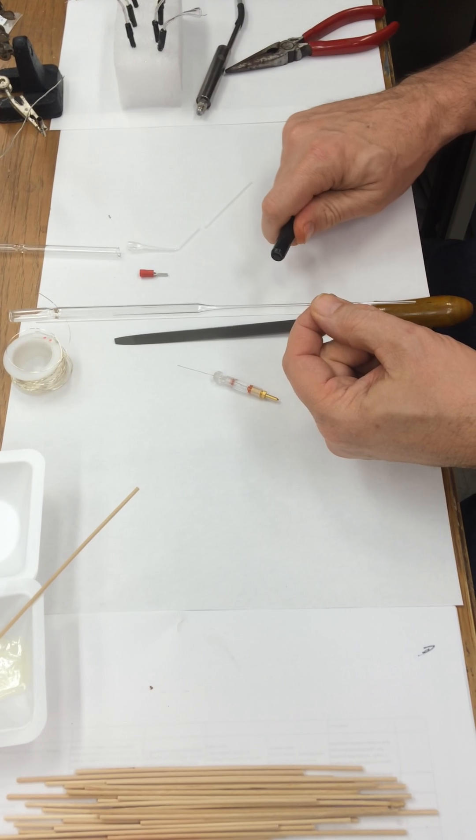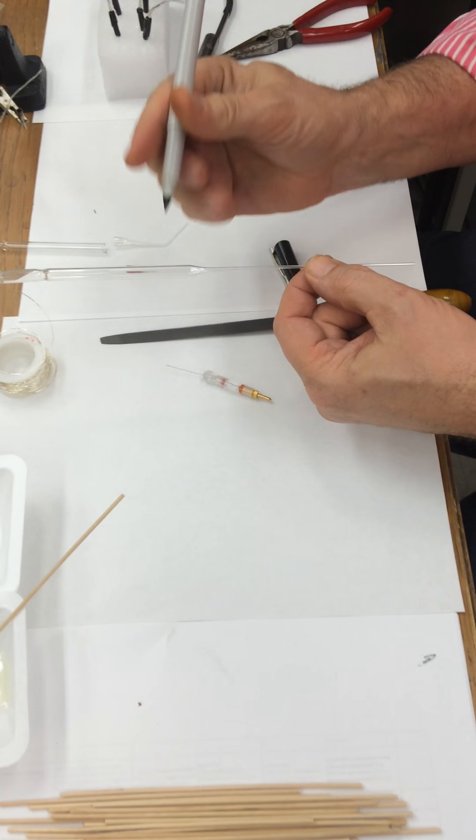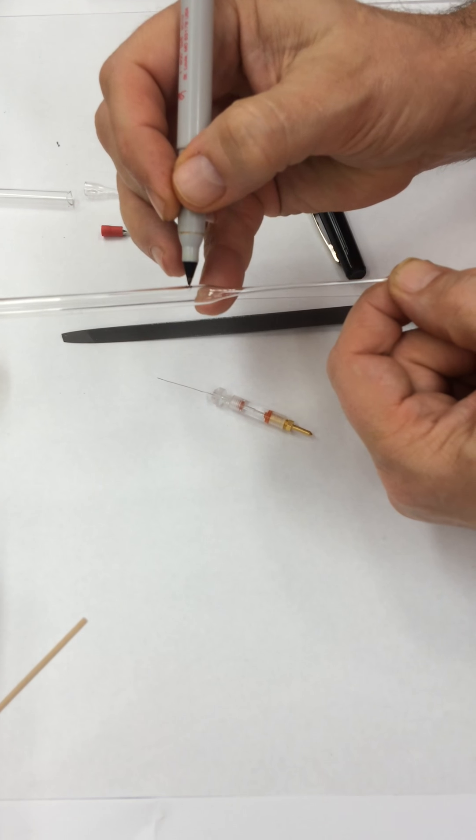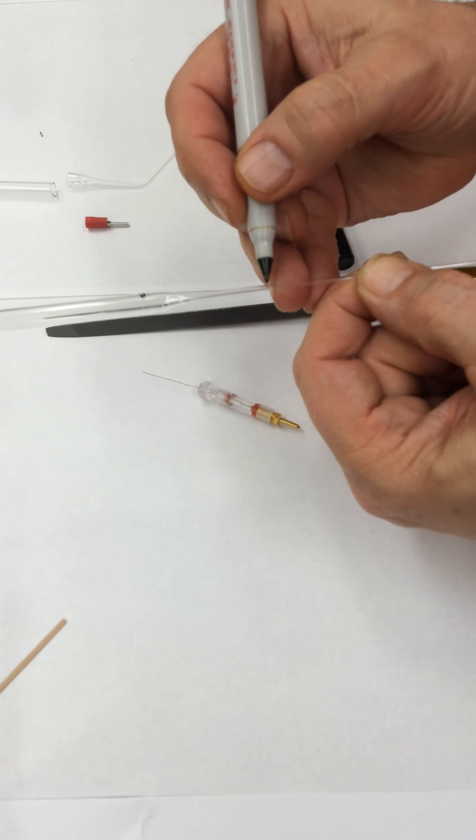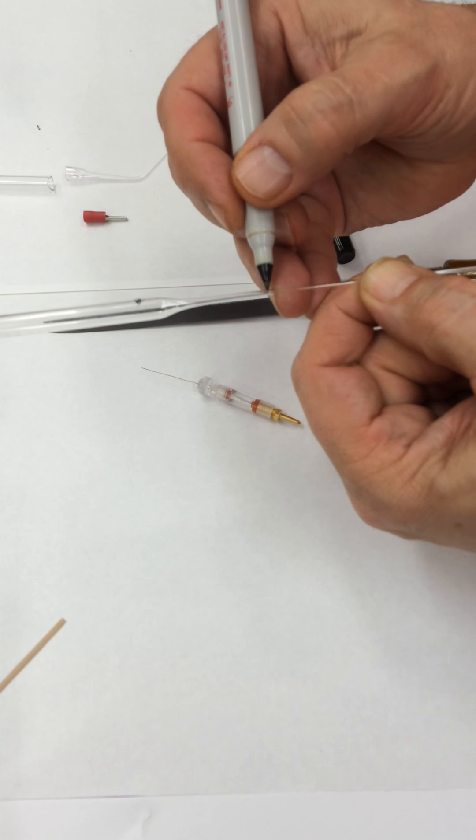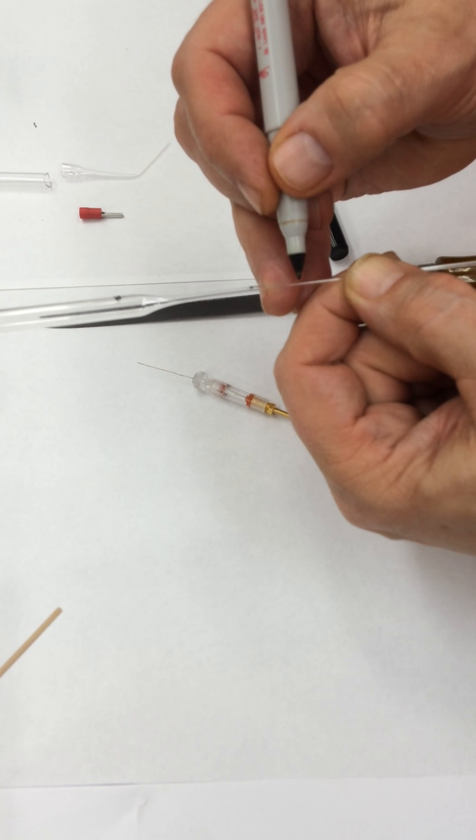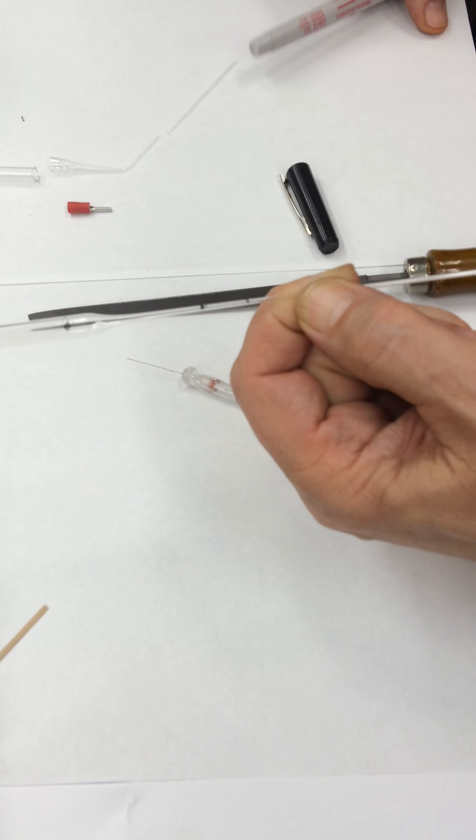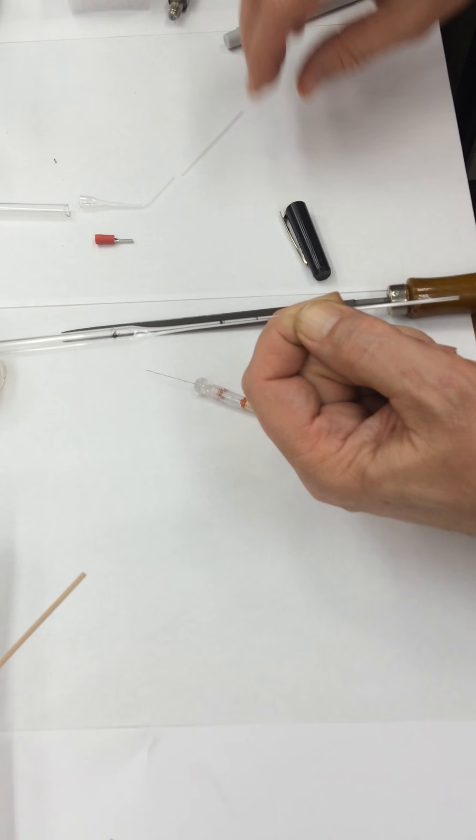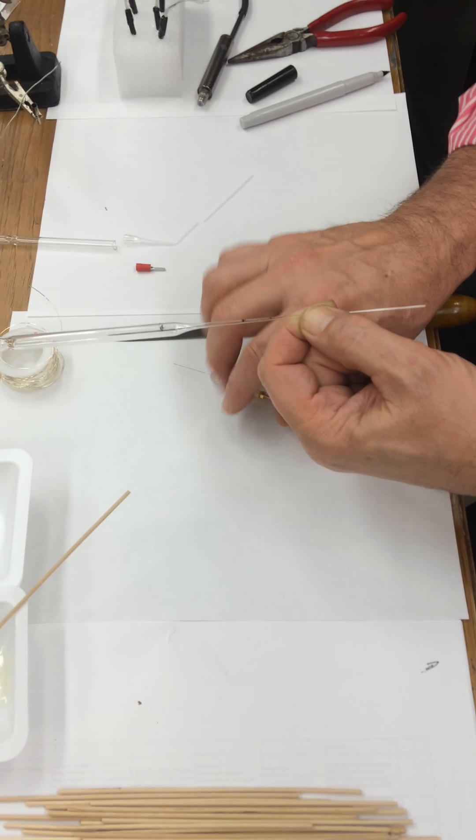What we do with this is we mark it in certain spots like right here and about here and about here. And why do we mark that? Because these are the spots that we're either going to bend it or break it into.